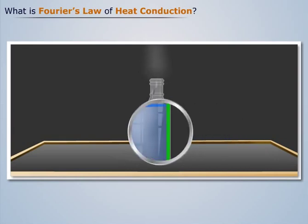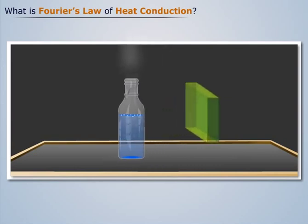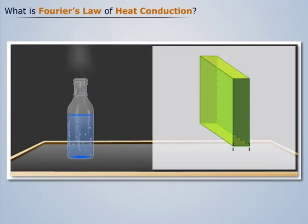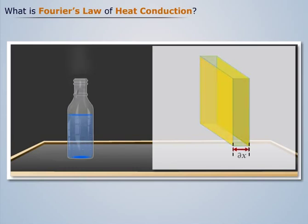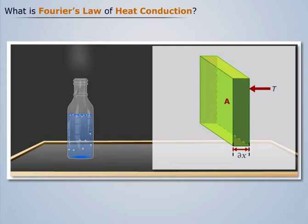Consider the wall of a bottle. Let delta X be the thickness, and A the area of the wall. Let T be the temperature of the outer surface, and T plus DT the temperature of the inner surface of the bottle wall.